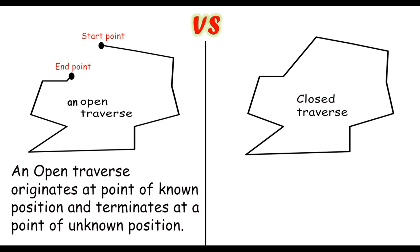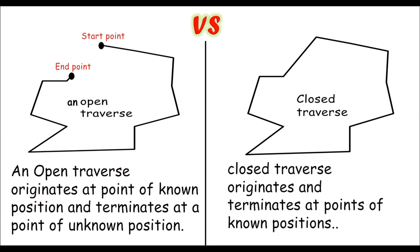Where a closed traverse originates and terminates at points of known position. This means the starting and endpoint of a closed traverse should be the same point. And that's it. So we learned what's a traverse.